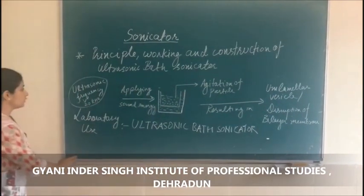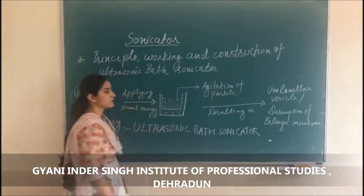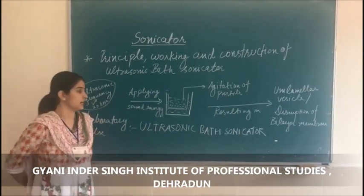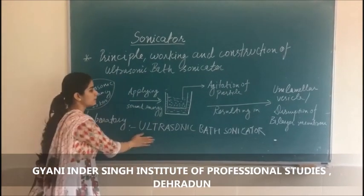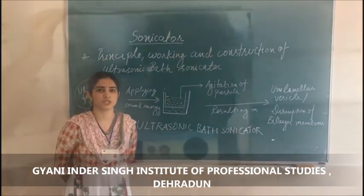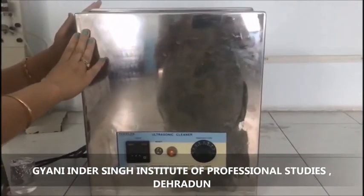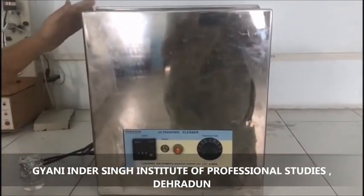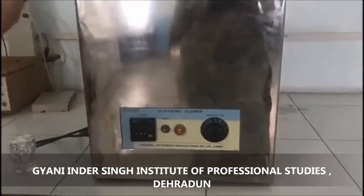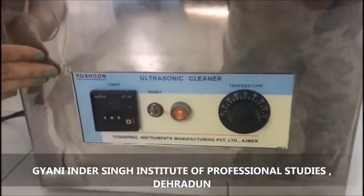In laboratory use, an Ultrasonic Bath Sonicator is also used for the process of Sonication. It is an indirect method of Sonication. This apparatus is also known as an Ultrasonic Cleaner or Ultrasonic Bath Sonicator, made by the Toshcon Company.